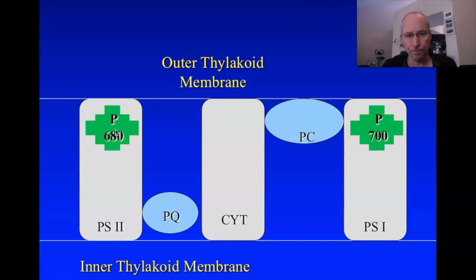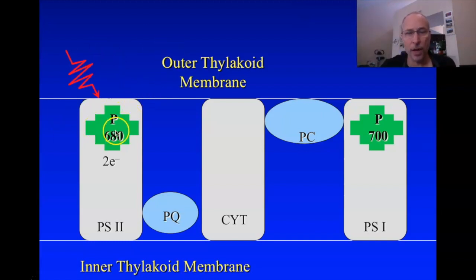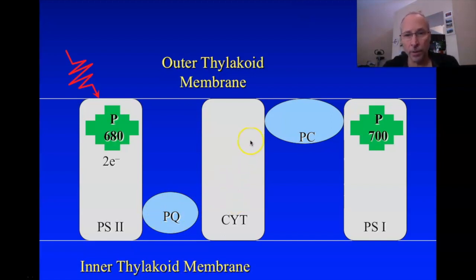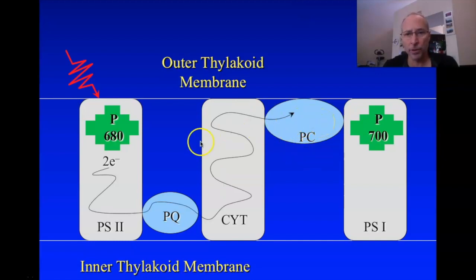Photons come in and impinge on the antenna pigment system. They get absorbed by the electron, boosting it to a higher energy state. From that high energy state, the electrons can go through an electron transport chain very similar to what we saw in the mitochondrion. The excited electrons then participate in redox reactions on photosystem II, which donates them to plastoquinone (PQ), which donates to a cytochrome — just like in the mitochondrion — which then donates to plastocyanin (PC). The electron transport chain does essentially exactly what we saw in the mitochondrion.